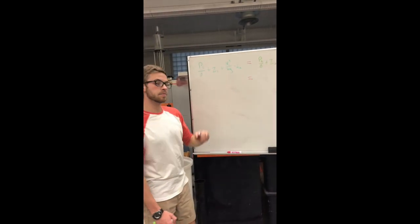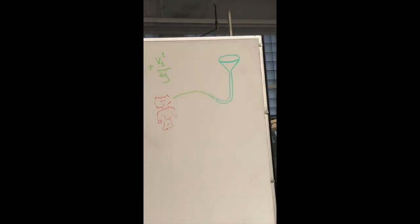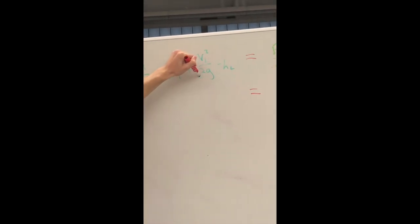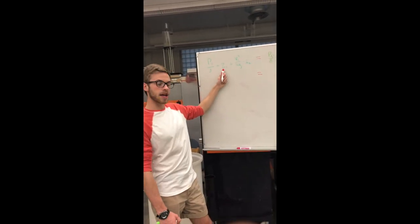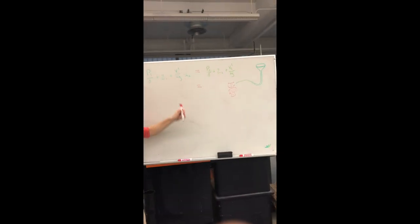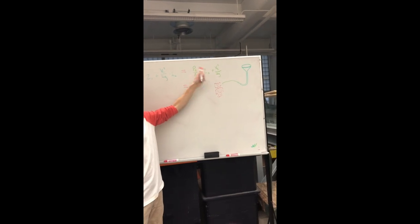We're going to treat the beer bong at the top as a reservoir so its velocity can be treated as zero, so that also cancels out. What we're left with on the left side is an elevation and a head loss, and on the right side we have a velocity component.